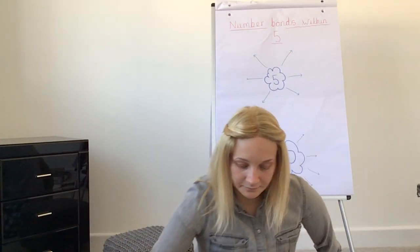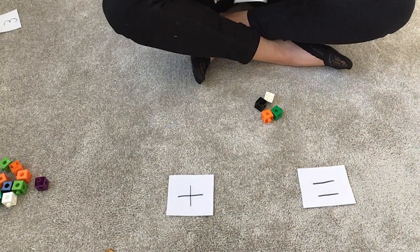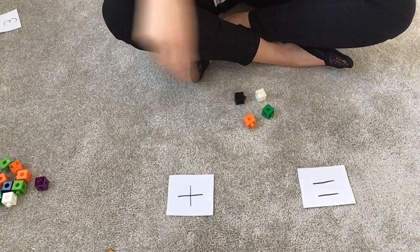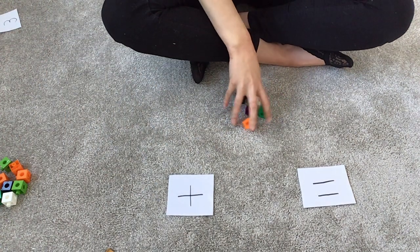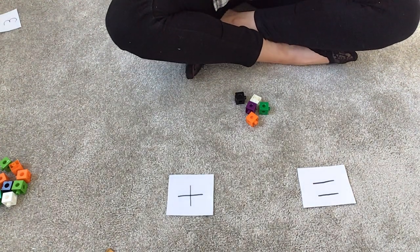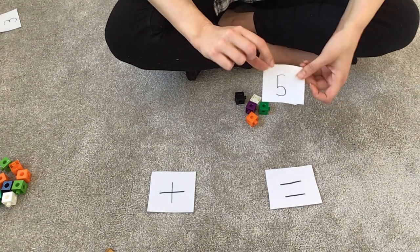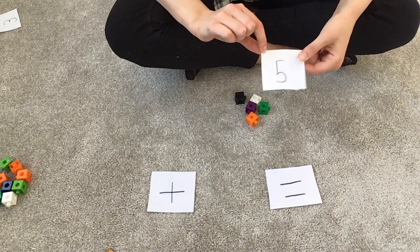On the carpet again, you will need some cubes or some objects to add. I've got five cubes out because that is how many I am working with. However, if you were working with the ten, then you will need ten cubes. I've got my add and my equals, and we are working up to five.